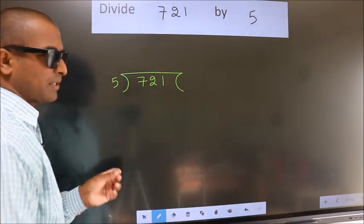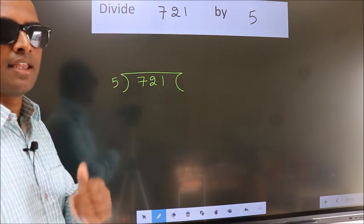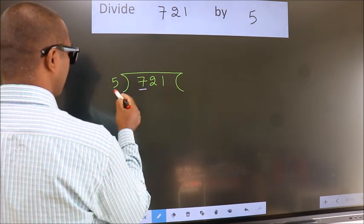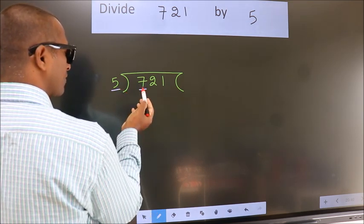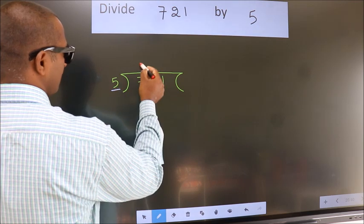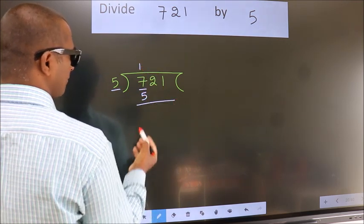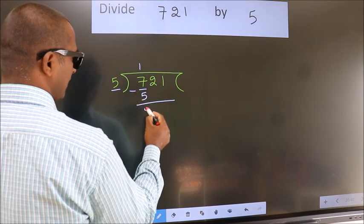This is your step 1. Next, here we have 7, here 5. A number close to 7 in the 5 table is 5 once, which is 5. Now we should subtract. We get 2.